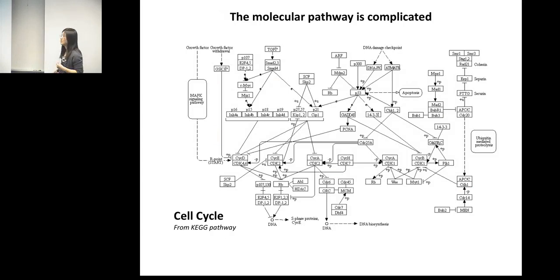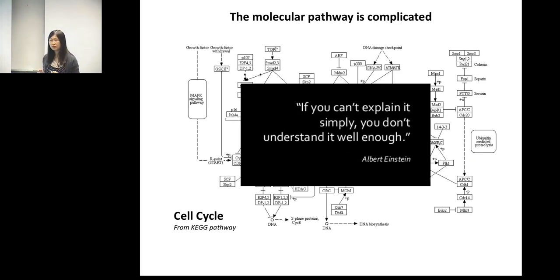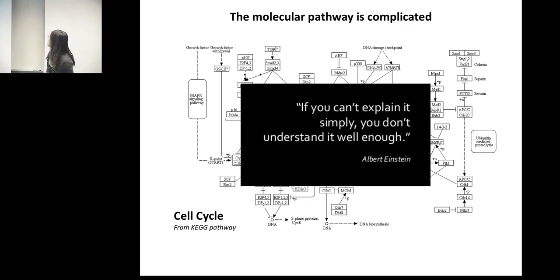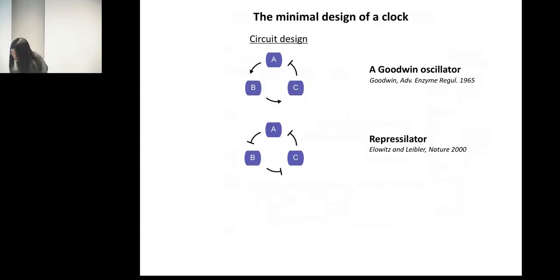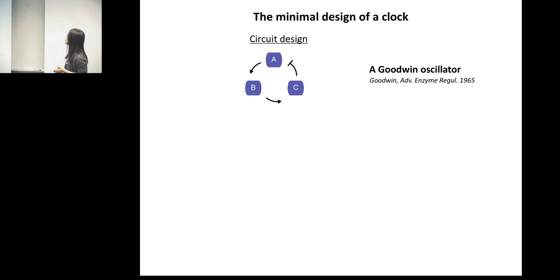Instead, we use a systems biology and synthetic biology approach. We ask: can we find out what is required if we are going to build an oscillator ourselves? What is the minimum design for an oscillator? That question was actually asked back in 1965 with the classical Goodwin oscillator. At the time there were no experimental tools to build it, but we could computationally predict whether such an oscillator could be built.